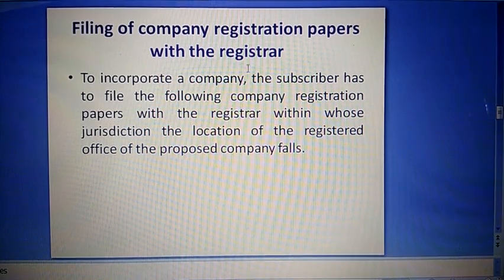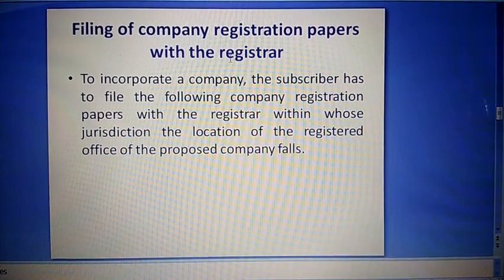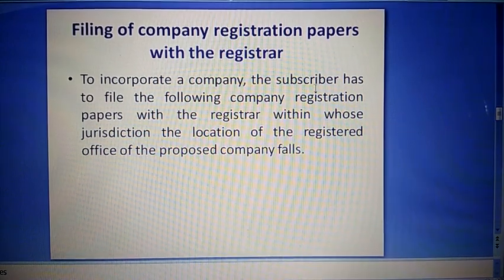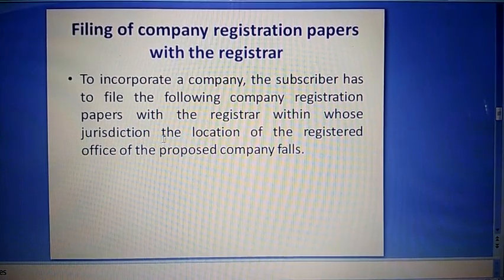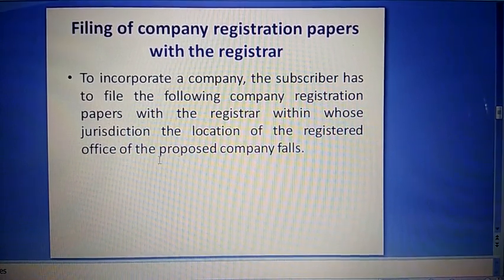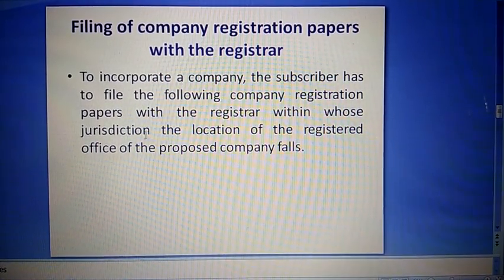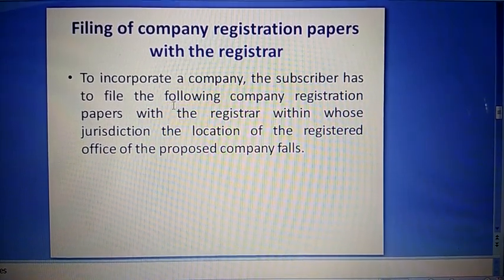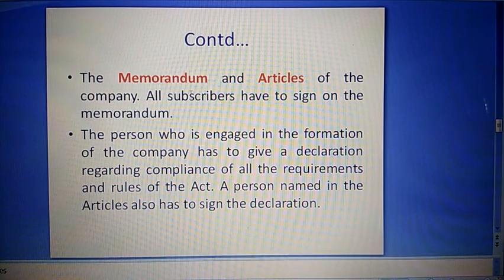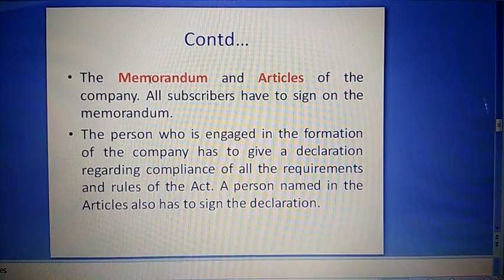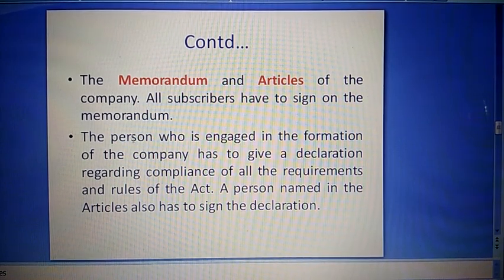The first step is filling of company registration papers with the registrar. To incorporate a company, the subscriber has to fill the following company registration papers with the registrar within whose jurisdiction the location of the registered office of the proposed company falls. So proposed company ka registered office jo jurisdiction mein aata hai, us jurisdiction ke registrar office mein jakar yeh documents bharne padhenge.